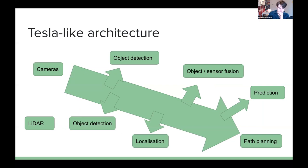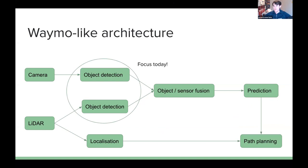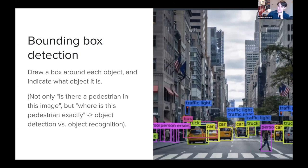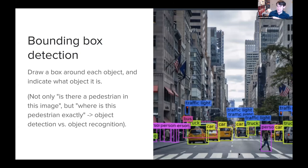There are several tasks people are trying to solve, and many competitions for them — download a dataset and get started, it's loads of fun. Bounding box detection is very well known: you draw a box around each object and indicate what object it is. You're not only doing a classification task — is there a pedestrian? — but also saying where exactly is this pedestrian, how big is it, how wide. If you have a car and this information, you can already try to navigate between the bounding boxes.